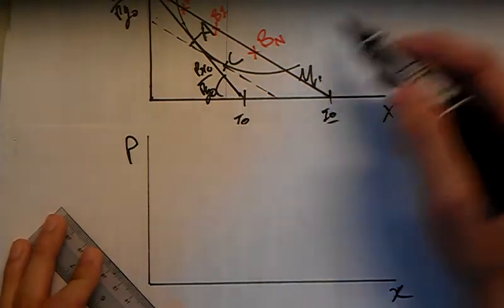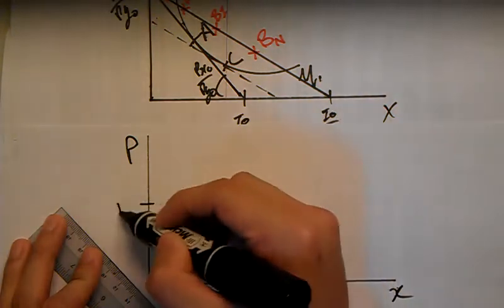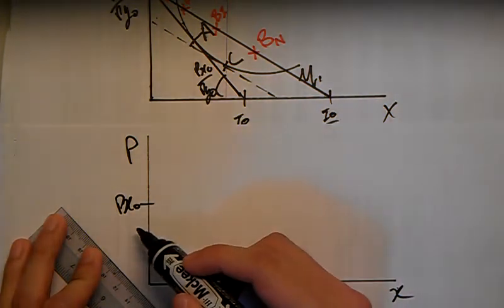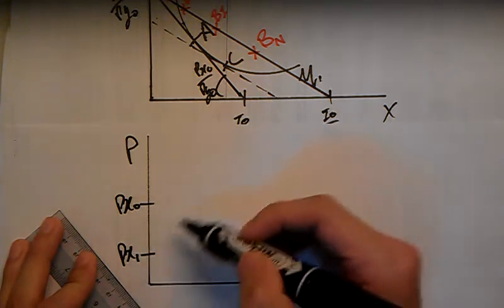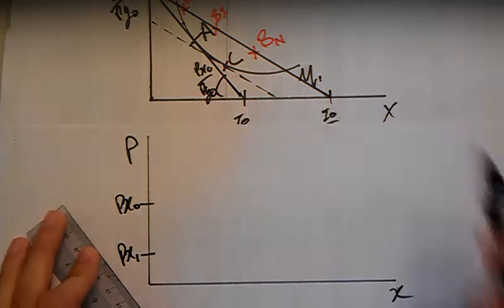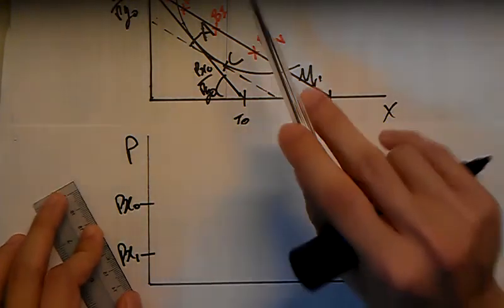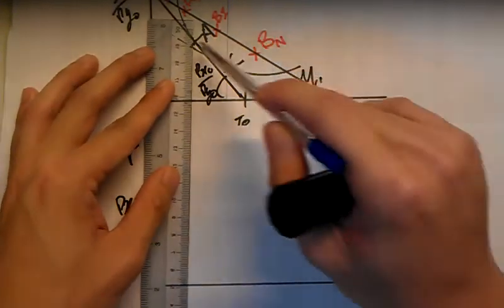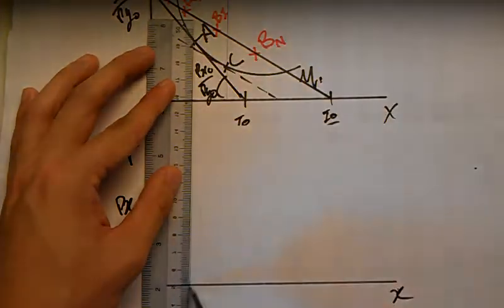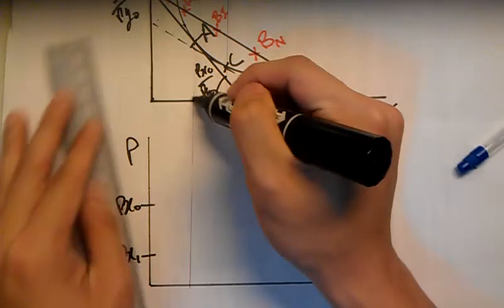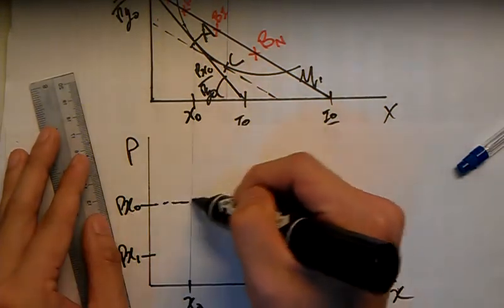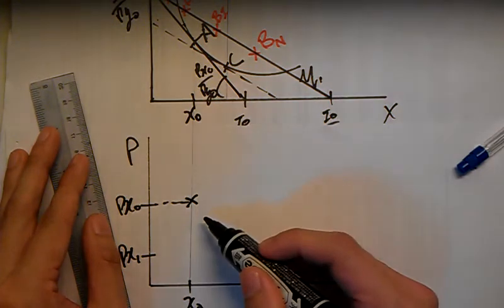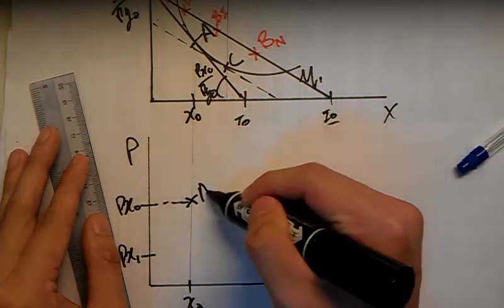We know that initially the price was P_X0, so you label this here. Then the price dropped to P_X1. We start with P_X0 first. From P_X0 initially we were at point A over here. I got one mistake—I didn't label the initial bundle. Initially you'll be at this point, so this is point A.